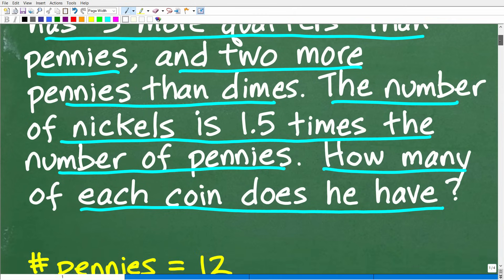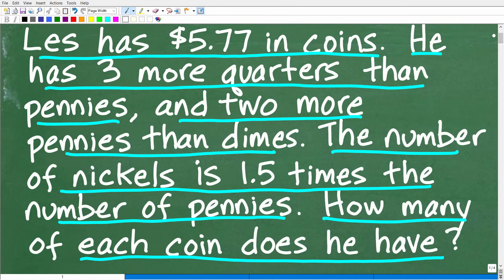Okay, so there is definitely a lot going on in this problem. But really, the bottom line is we have all this information, and we're looking for the number of all these coins. So what coins are we talking about? Well, we have quarters, we have pennies, we have dimes, and we have nickels.